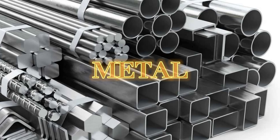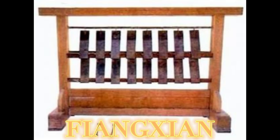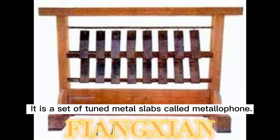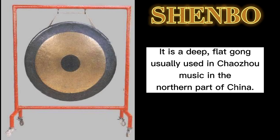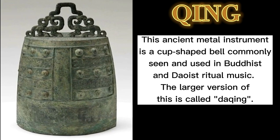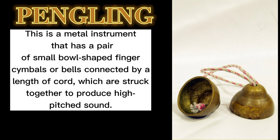Under the metal category, the Fangxiang is a set of tuned metal slabs called a metallophone. The Shengbo is a deep flat gong usually used in Chaozhou music in the northern part of China. The Qing is an ancient cup-shaped bell commonly seen in Buddhist and Taoist ritual music; the larger version is called Da Qing. The Pengling is a metal instrument consisting of a pair of small bowl-shaped finger cymbals or bells connected by a cord, struck together to produce a high-pitched sound.